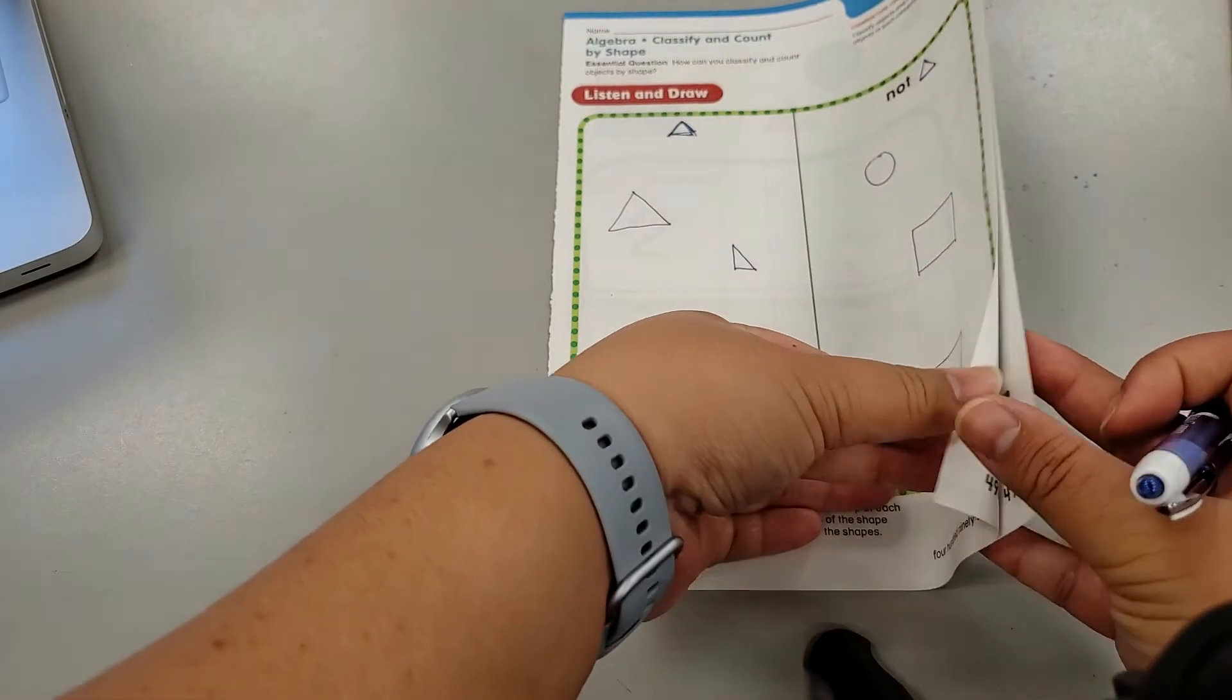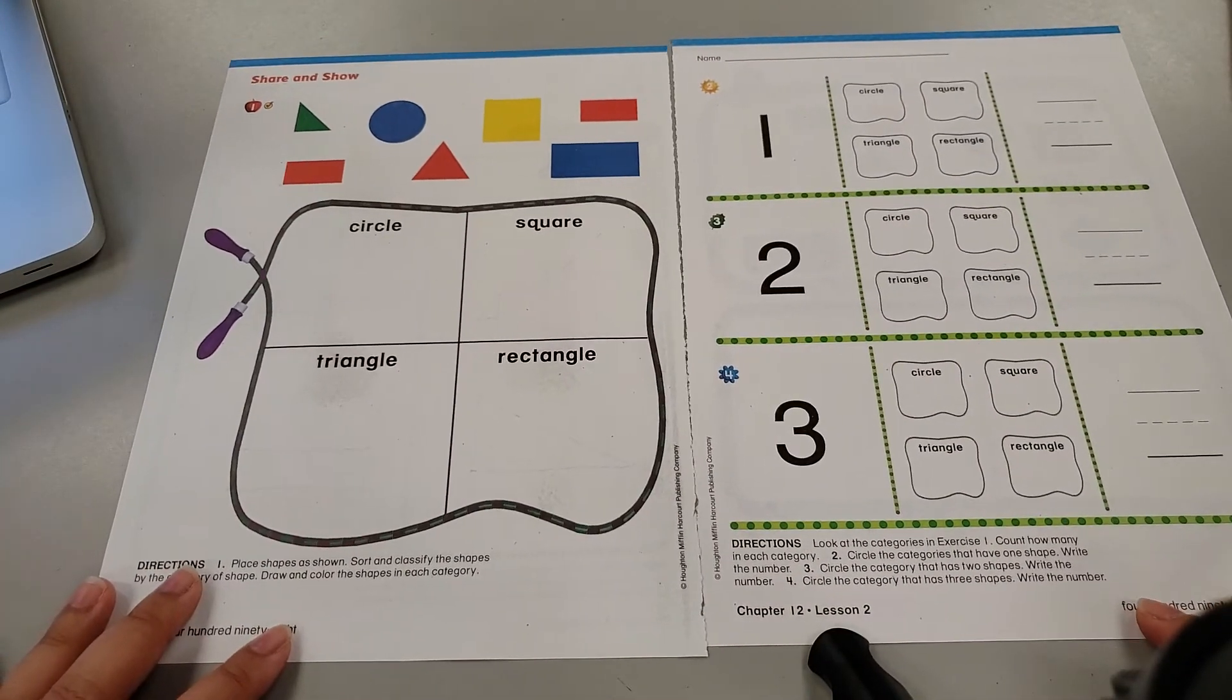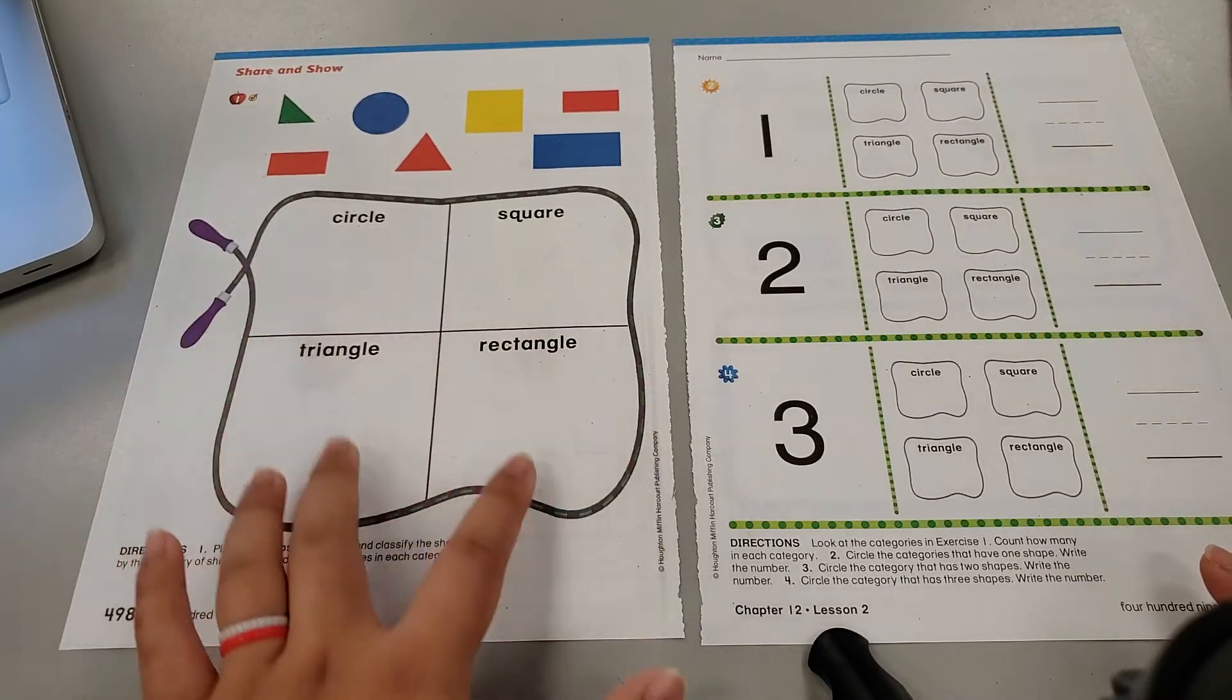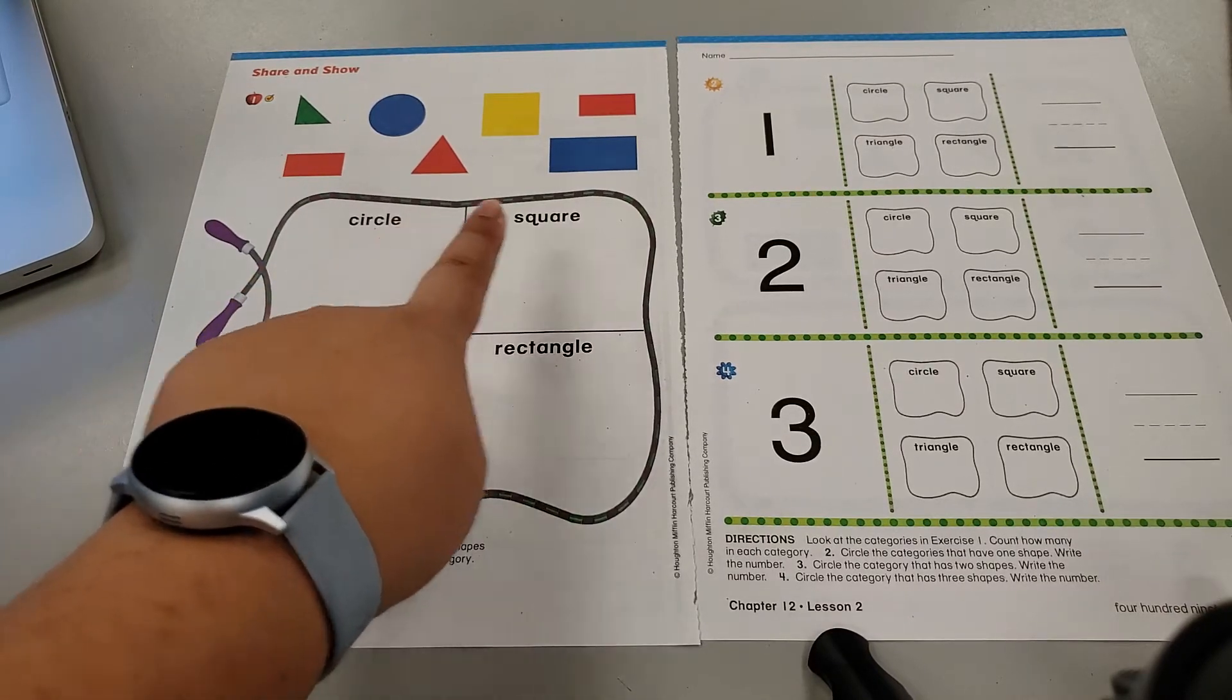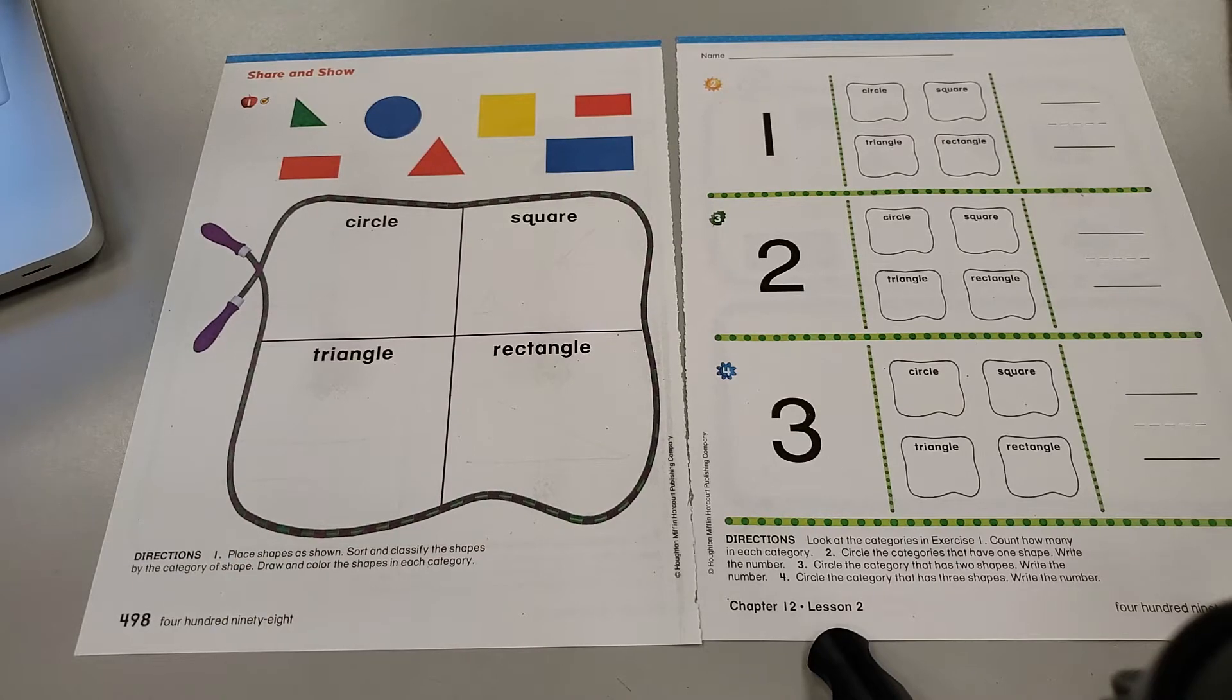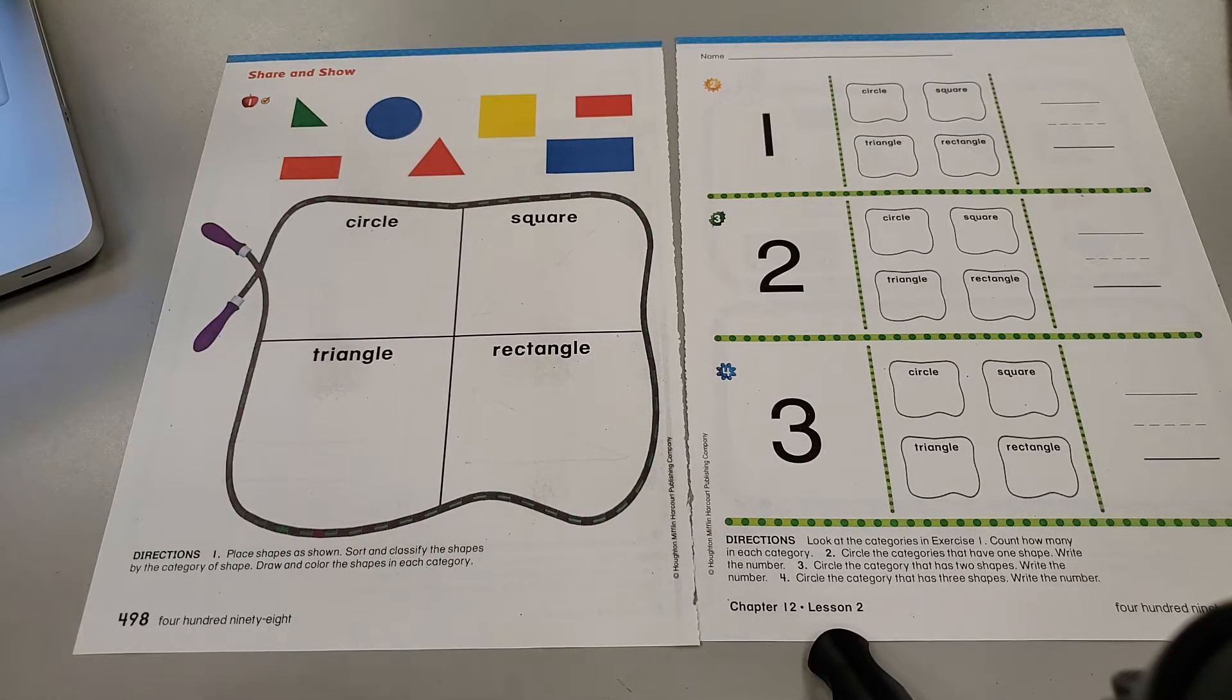Let's go ahead and open up our pages, Kinder. And it is similar to our last work also. We just have new categories to look at here. Circle, square, triangle, and rectangle.